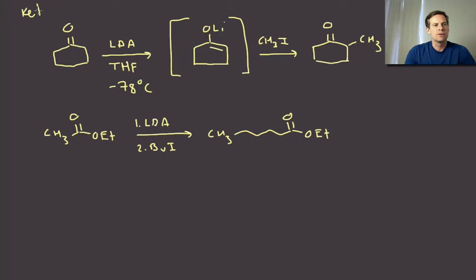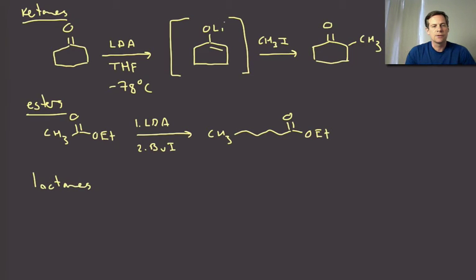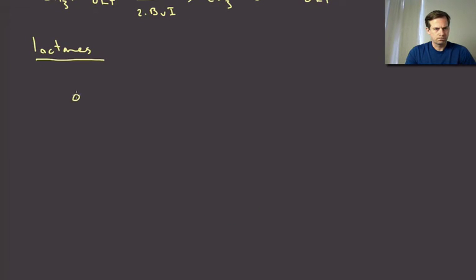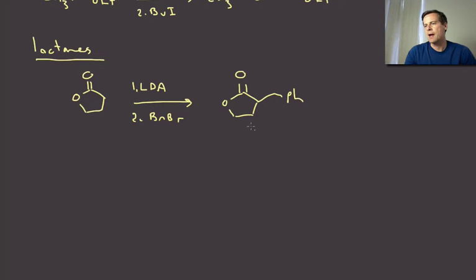Ketones can be done, esters can be done, cyclic esters which are called lactones - we could certainly think about doing these. Here's an example of a cyclic ester, a lactone. With LDA and benzoyl bromide, we would expect to get that product.